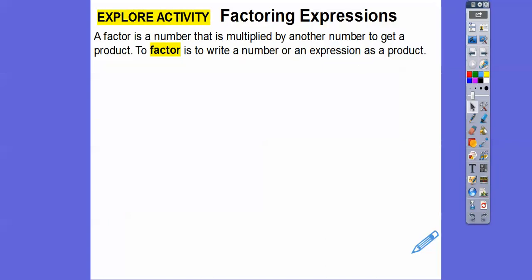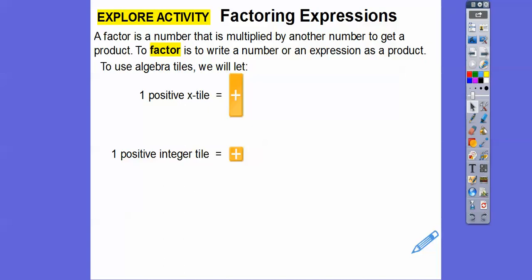So, factoring expressions. A factor is a number that is multiplied by another number to get a product. To factor is to write the number or expression as a product. Factoring is the opposite of multiplying — factoring is the opposite of distributing. We're going to use algebra tiles here to show why that is.